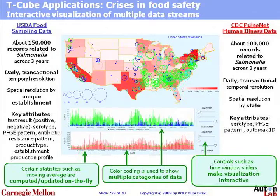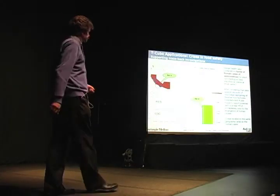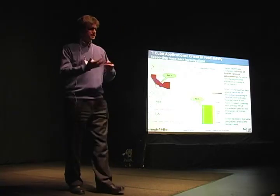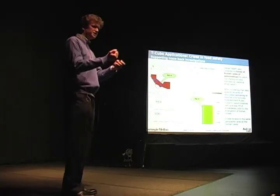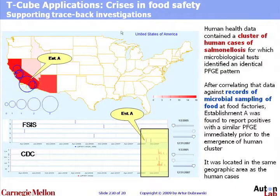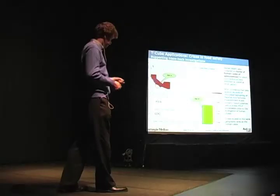We are using the same technology to support food safety investigation. In this case you see an ovulate diagram, both geospatially and temporally, showing the distribution of human cases of salmonellosis in the United States and also the results of microbial testing of food samples performed by the USDA at food factories. This data can be very interactively manipulated by users for getting insights by eyeballing the data, and they can also execute algorithms for automated detection of possible correlations between the human cases and correlated events in the food safety domain.